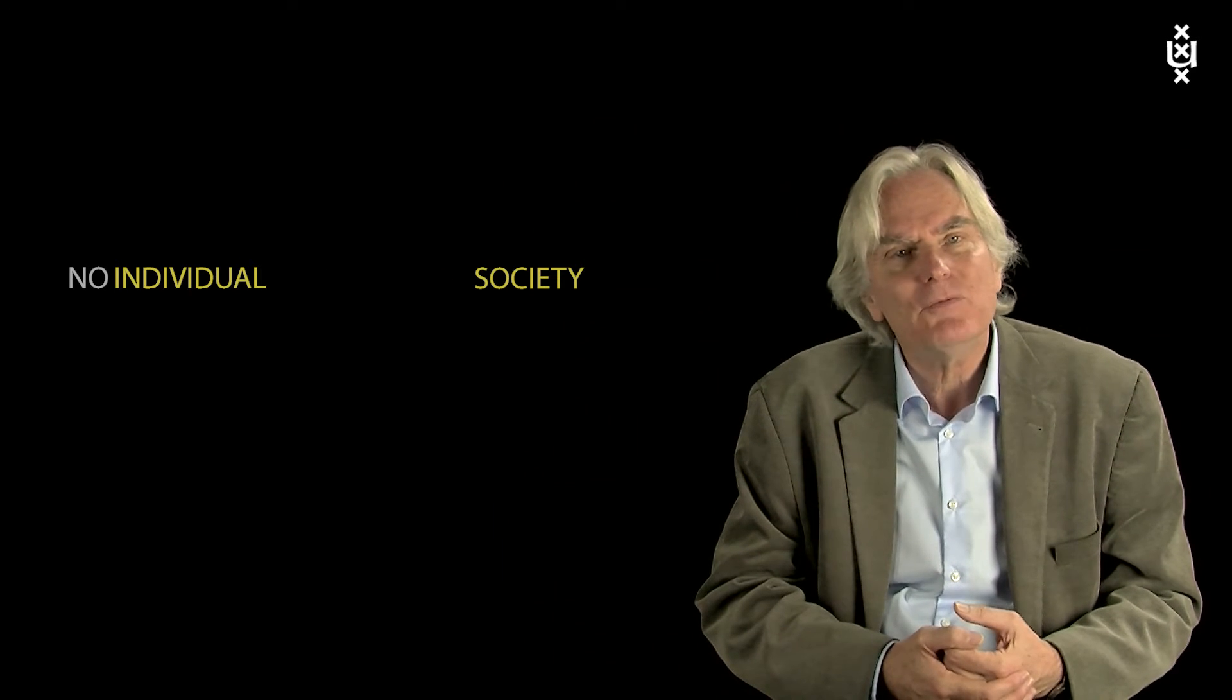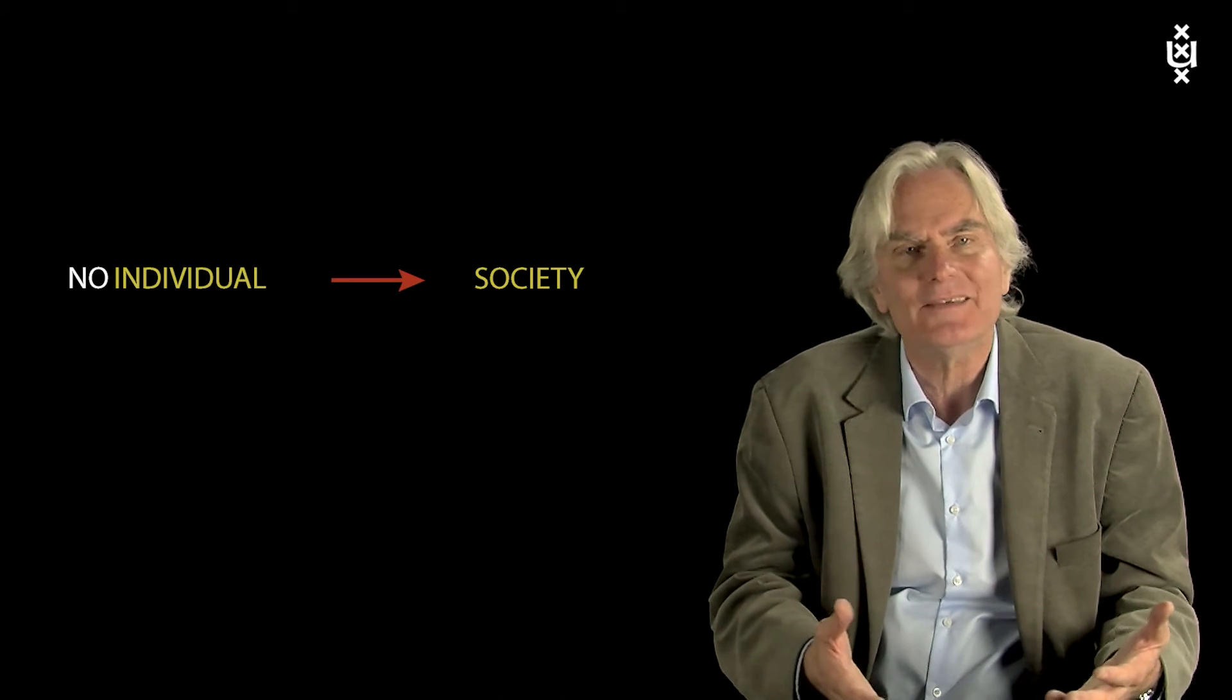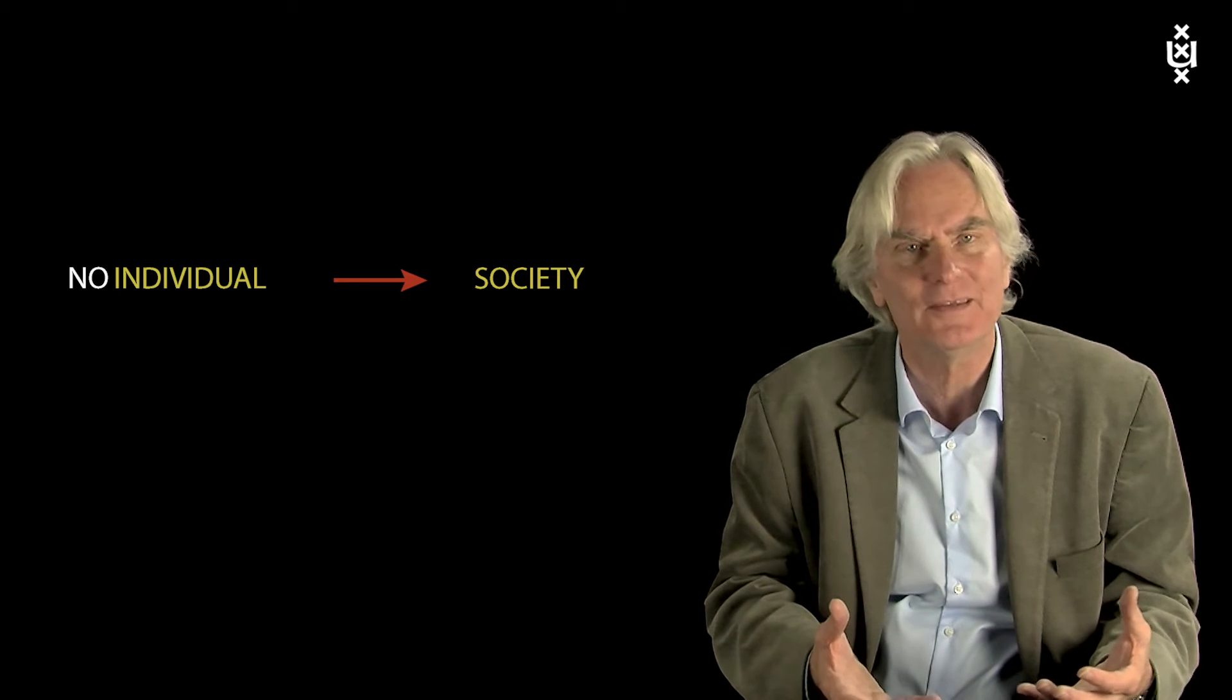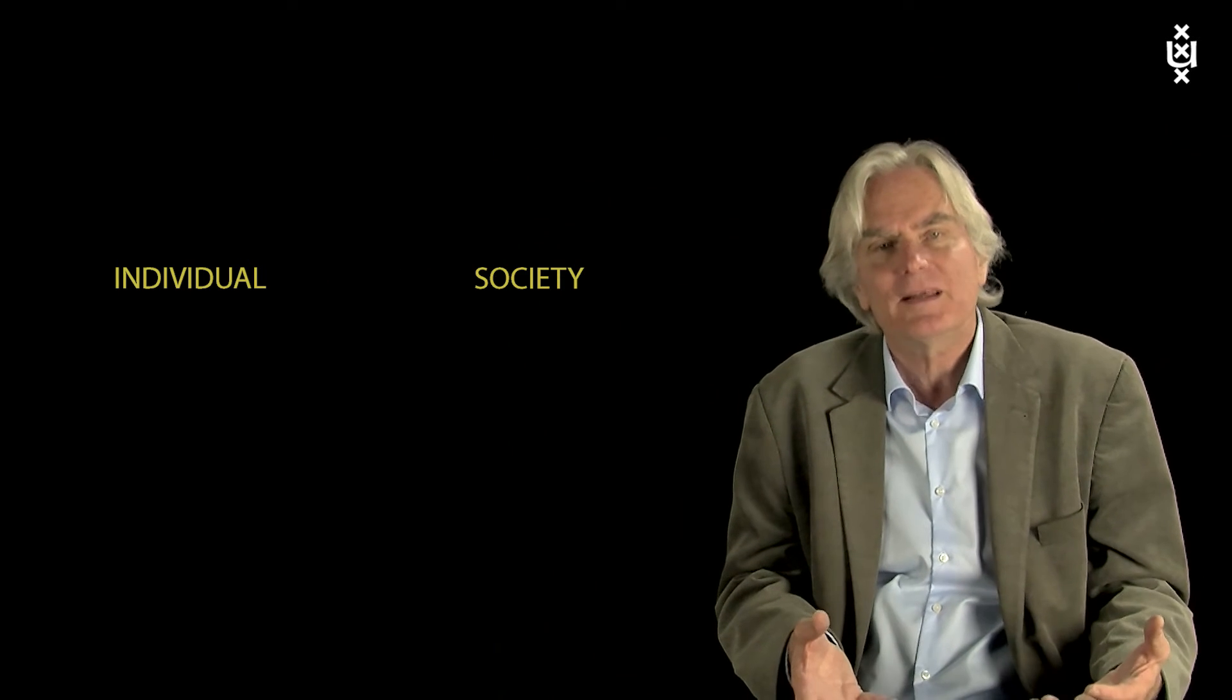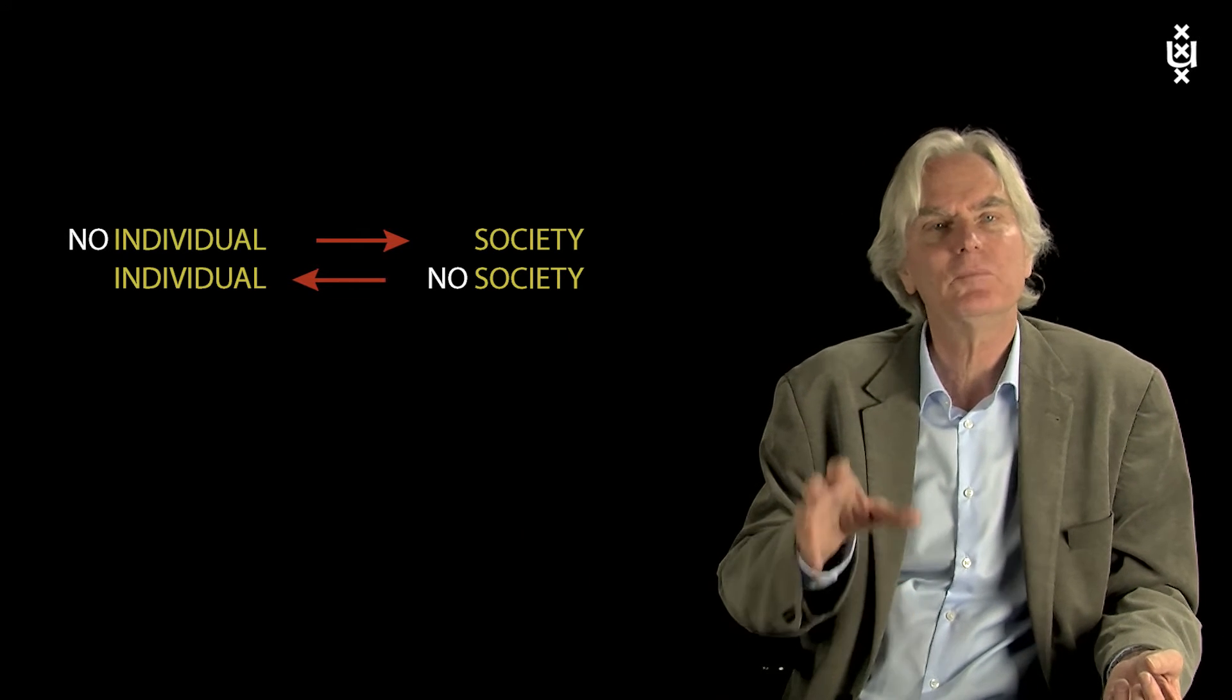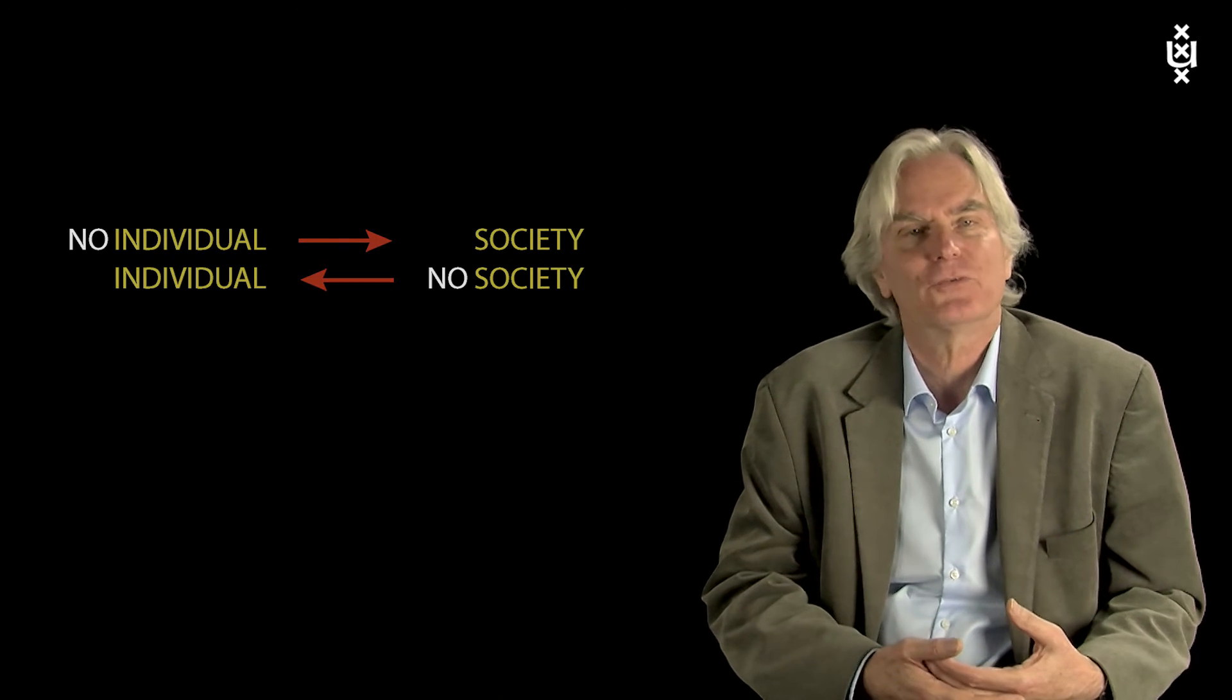There can be no individuals without the society. The isolated, unsocialized individual doesn't exist. It's a figment of the philosopher's imagination, not an existing entity that can be studied in an empirical science. And on the other hand, of course, there can be clearly no society without individuals. So when we oppose those two concepts, we can be certain that our theories will lead us into a dead-end street.